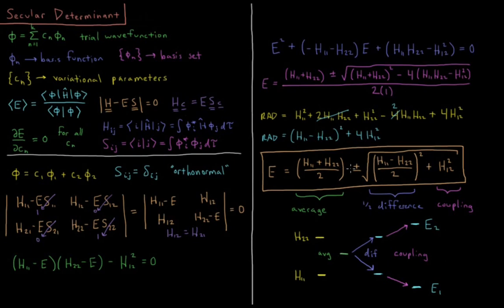Then to get our two states, we do plus or minus this radicand. The first part is h11 minus h22 over 2, half the difference between h11 and h22. If this term were zero, you'd go up half the difference for the plus state, minus half the difference for the minus state. So if this term weren't there, the two energies we would get would just be h11 and h22.